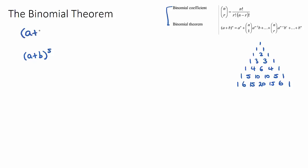The first step is to look at what the power of our bracket is — in this case it's five. That straightaway tells us there will be six terms in our full expansion; there's always one more than the power. So if there's a bracket to the power of seven there would be eight terms, and if it was to the power of 13 there would be 14 terms. Once we've identified the power, we want to go to the fifth row of Pascal's triangle.